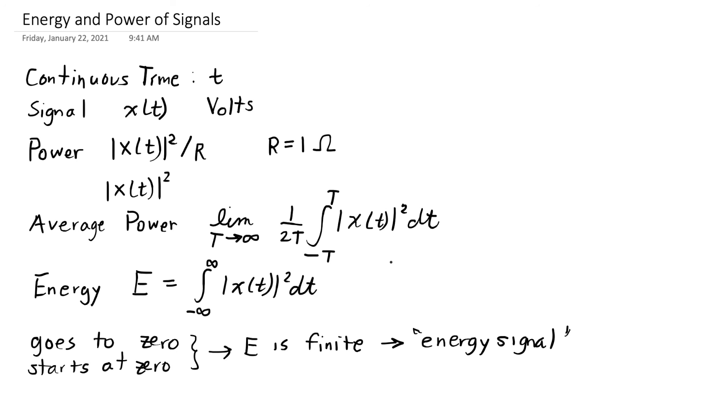But when our power goes on for all time, like imagine a sinusoid that goes on infinitely in all directions, so we have this signal that just goes on and on in both directions, that's going to have infinite energy because the instantaneous power is going to be positive for all time, well positive or zero for all time, and when I calculate the energy, I'm just going to get infinity.